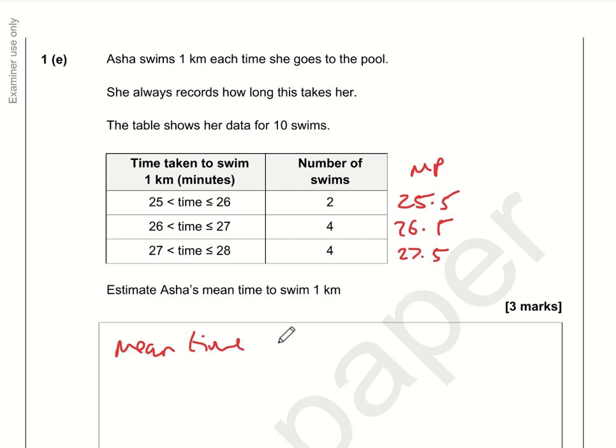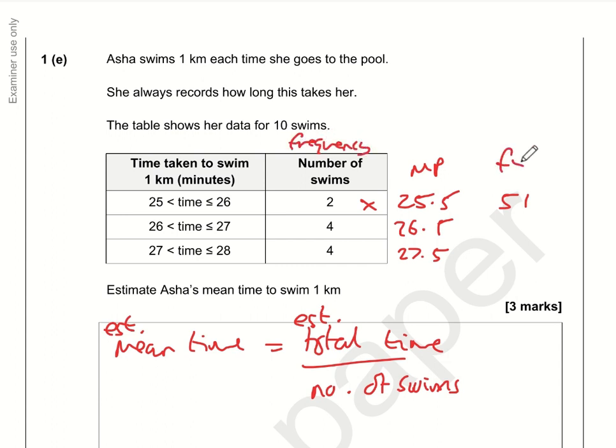The mean time would be the total time divided by the number of swims. She's done two swims that took, we're estimating, 25.5 minutes each, so the total time is two times 25.5, which is 51 minutes. We're multiplying frequency times the midpoint. Four times 26.5 is 106, and four times 27.5 is 110.